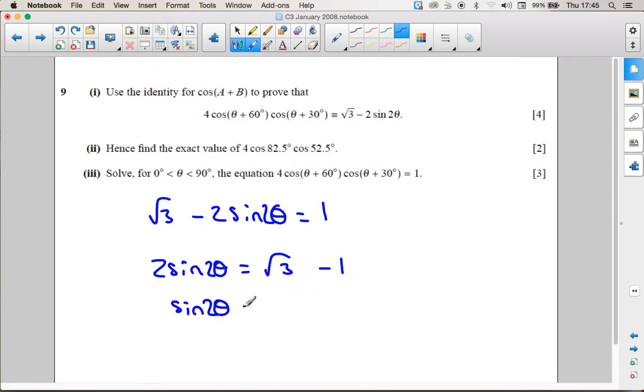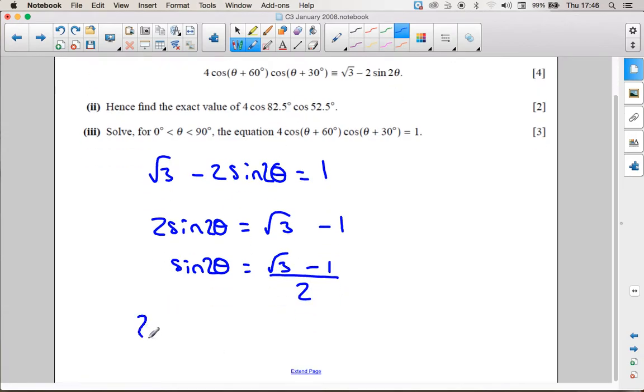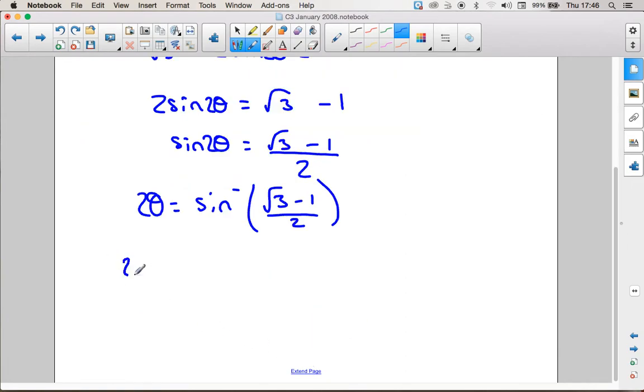Therefore sin 2 theta is equal to root 3 take away 1 all over 2. And therefore 2 theta is equal to the inverse sine of that. So 2 theta is equal to 21.4.